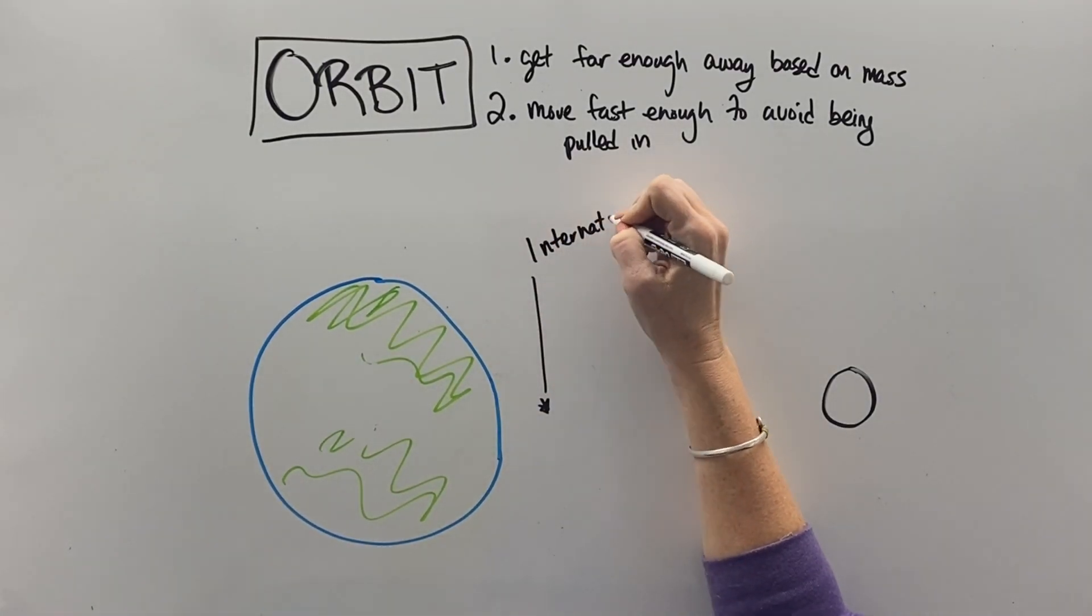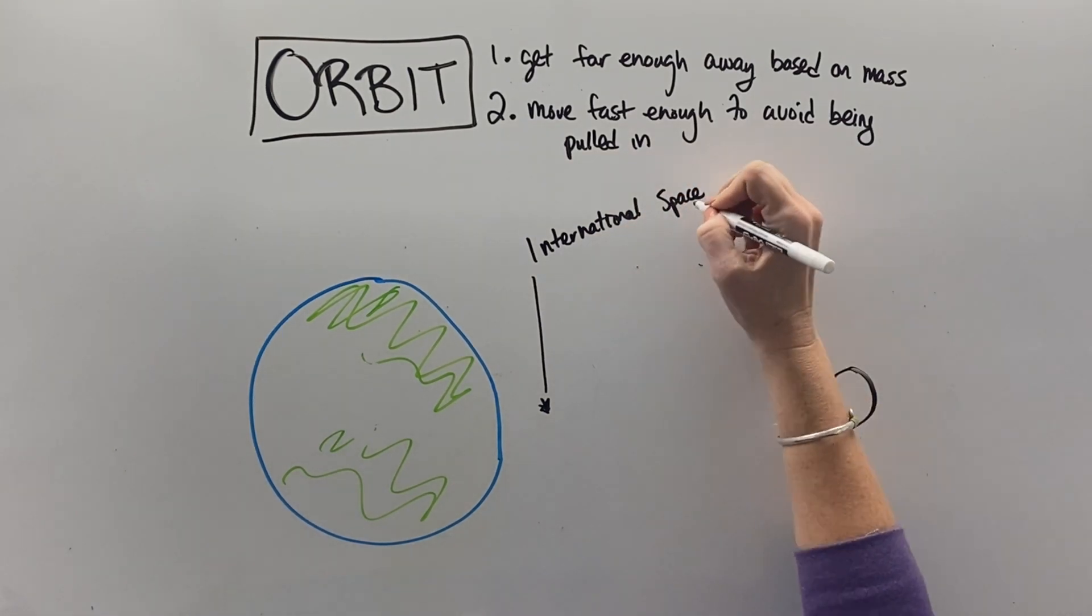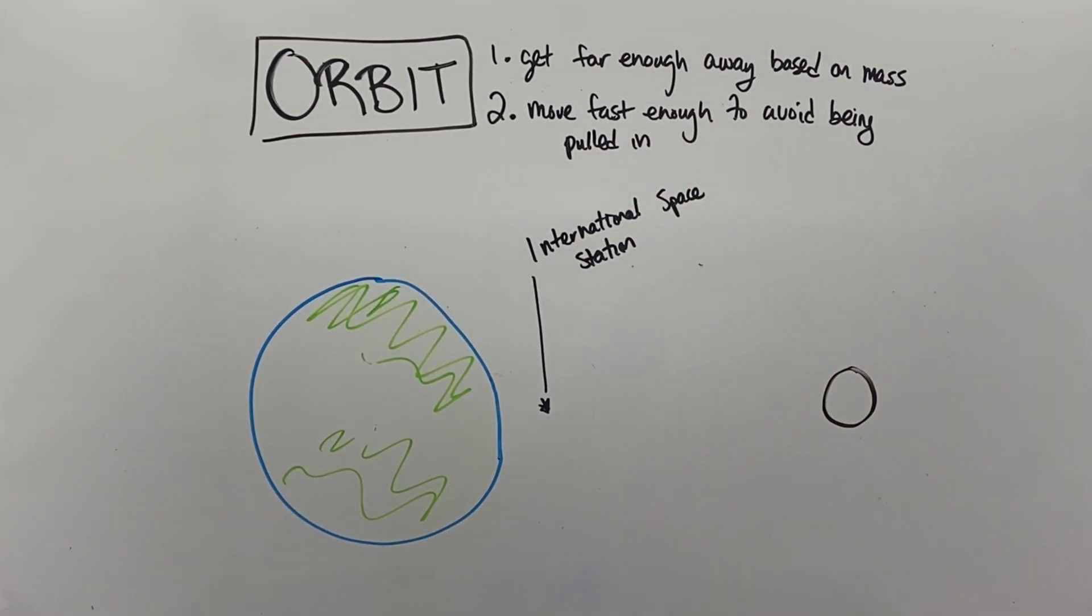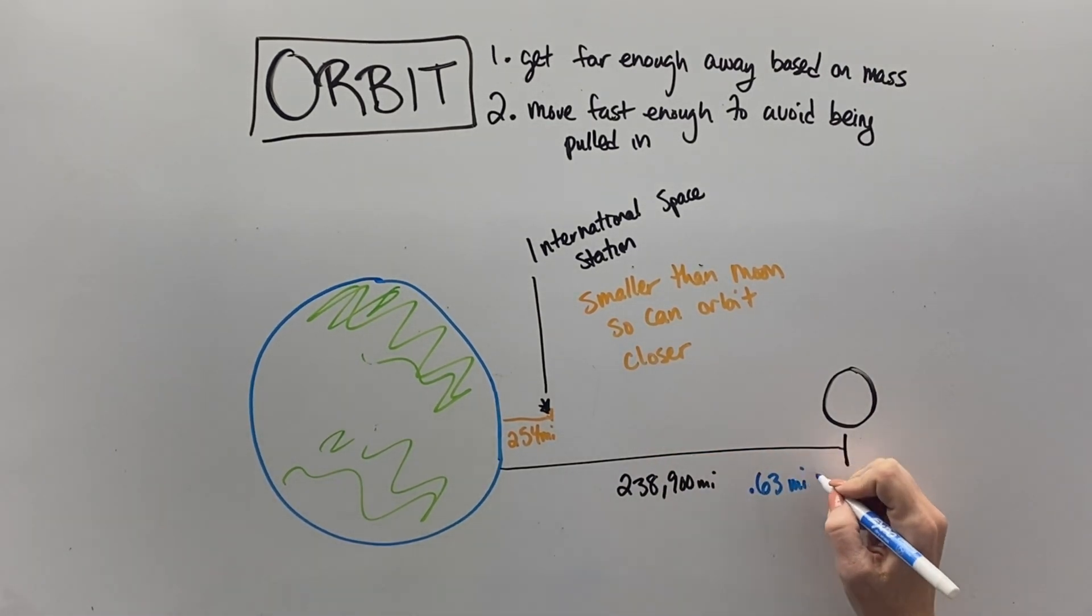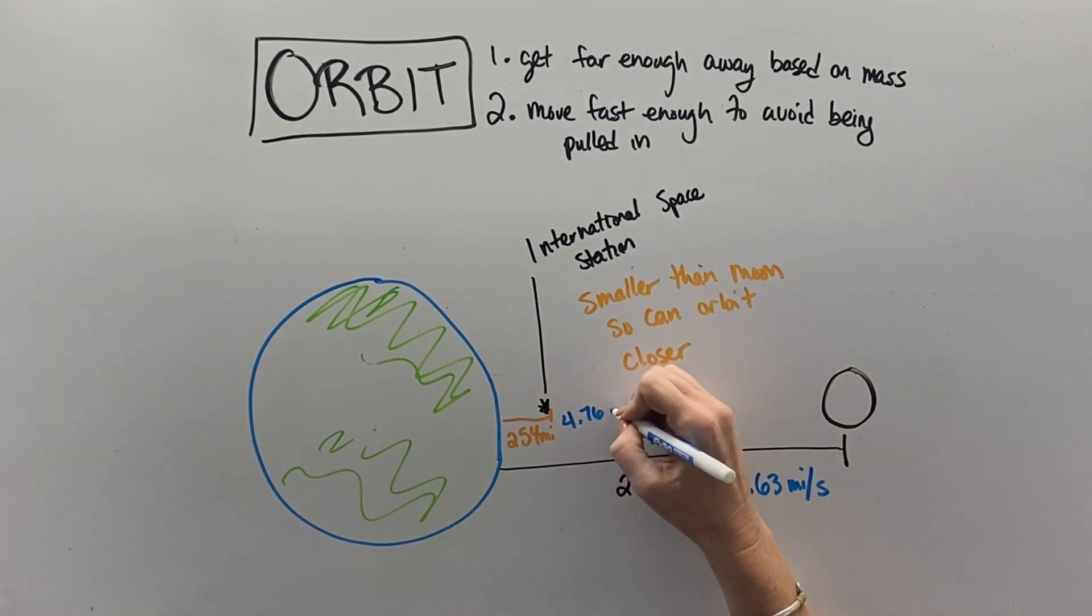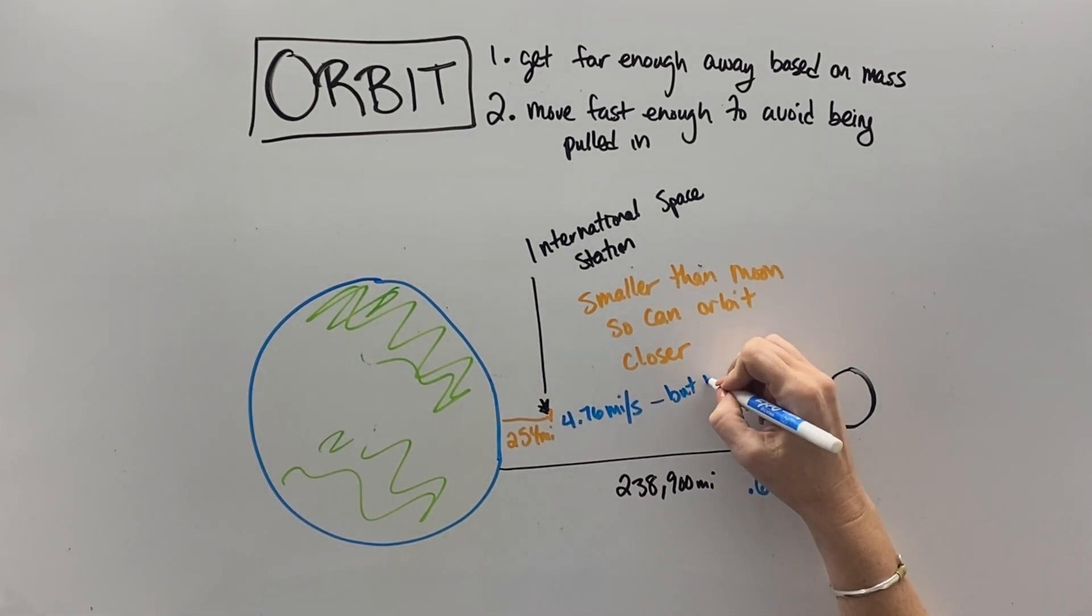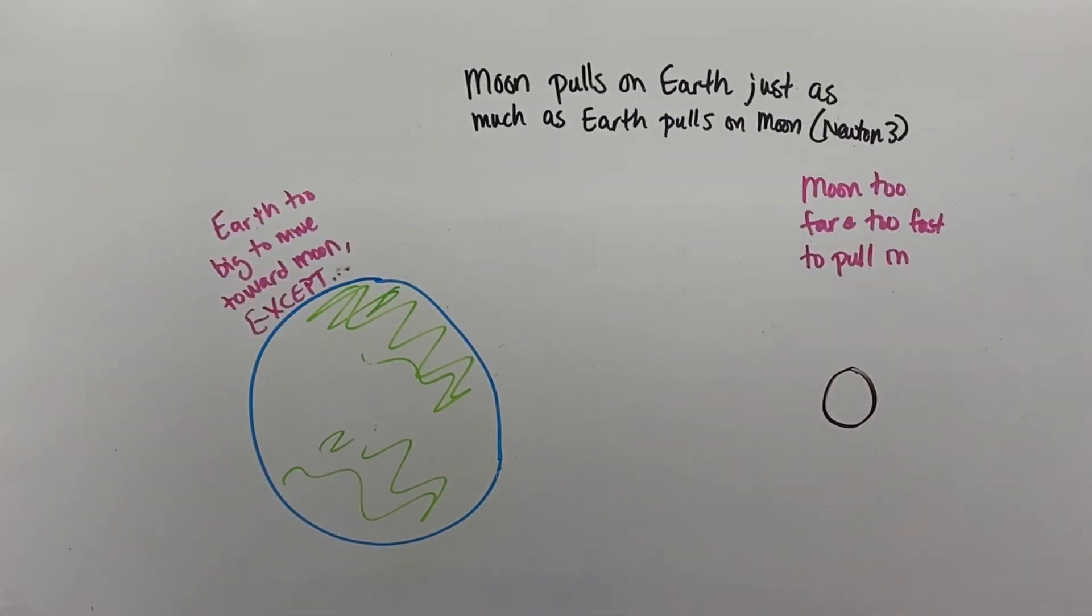So, the orbit is a thing that happens when we get far enough away, based on mass, and move fast enough to avoid being pulled in. The International Space Station is much smaller than the Moon, so its orbit gets to be much closer to planet Earth. It is 254 miles above planet Earth, whereas the Moon is 238,900 miles away. The Moon travels at 0.63 miles per second, and the Space Station travels at 4.67. So, even though the Space Station is closer, it must travel faster.